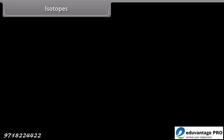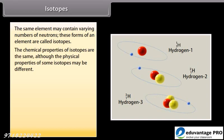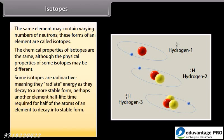Isotopes. The same element may contain varying numbers of neutrons. These forms of an element are called isotopes. The chemical properties of isotopes are the same, although the physical properties of some isotopes may be different. Some isotopes are radioactive, meaning they radiate energy as they decay to a more stable form, perhaps another element half-life. Time required for half of the atoms of an element to decay into stable form.